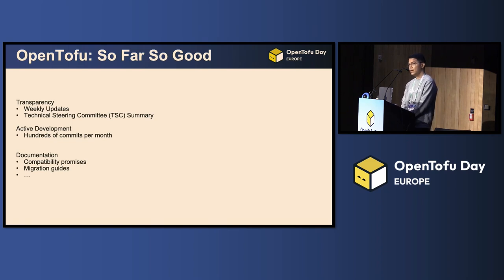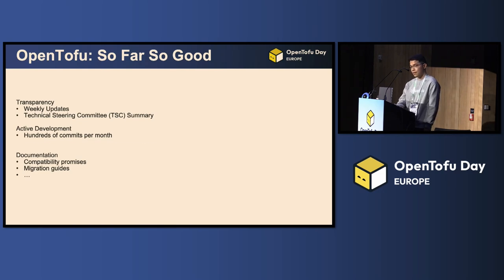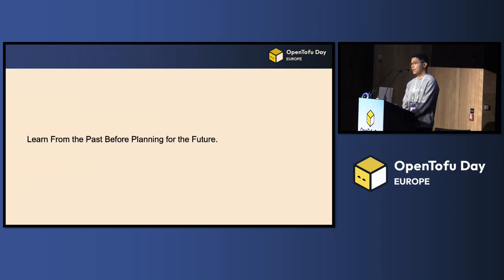Here, 'we' refers to both users and the community. OpenTofu is actually a newly born project, but on the other hand, it also inherits a long history from its predecessor, which is Terraform. So I think we can learn from the past before planning for the future.